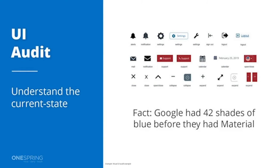What you'll see very quickly is that everyone will realize how many different usages exist across components. As a fun fact, even before Google had Material, when they did their inventory they found that they had 42 different shades of blue. Simple things like that can be very revealing in terms of identifying those needs.